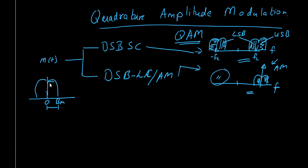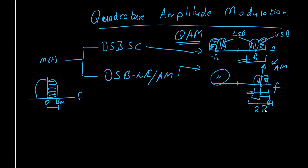Looking at the bandwidth of the message signal, it was from 0 to BM — this is the bandwidth of the message signal. In both double sideband suppressed carrier and AM (double sideband large carrier), the bandwidth is BM on each side, so the total transmission bandwidth is 2×BM. In both cases we have 2×BM of transmission bandwidth, which is not desirable.